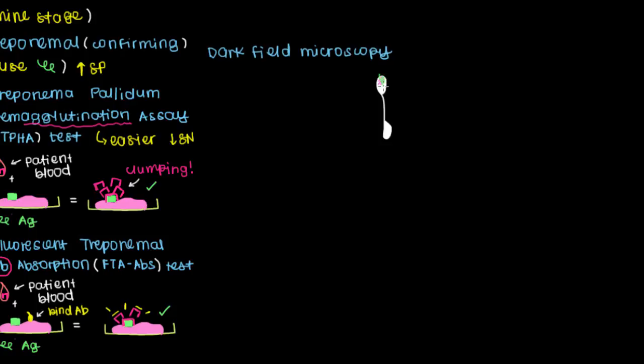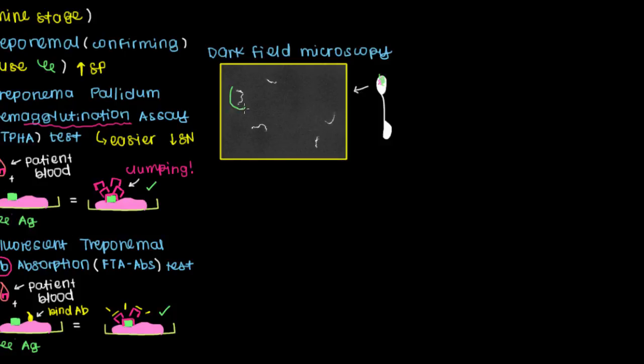If this patient does in fact have syphilis, you'll actually see spirochetes under this microscope. As you can see here, these squiggly things are the syphilis treponemal spirochetes that are present in this sample. If you see these guys under the dark field microscope, that's a very high specificity test, which means you're less likely to have false positives, and instead confirm that this person is infected with syphilis.